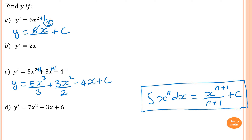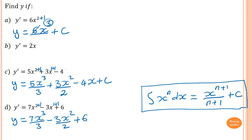The same rule applies here. y equals — add 1 to the power 2 to get 3, so 7x cubed divided by 3, minus — x to the power 1, add 1 to get 2, so 3x squared divided by 2, plus — 6x is 6 times x to the power 0, add 1 to get power 1, so 6x, plus a constant C.